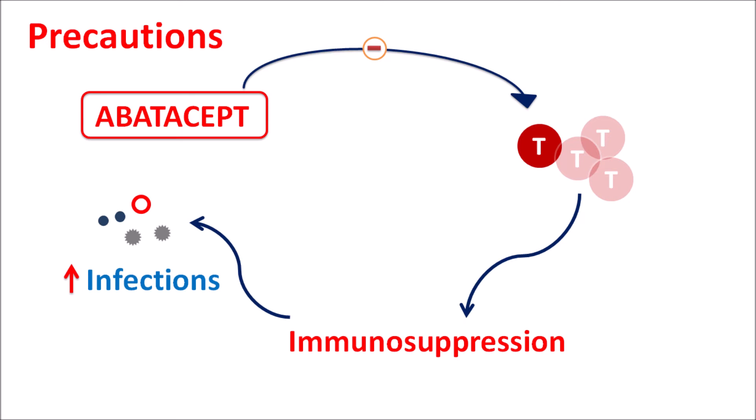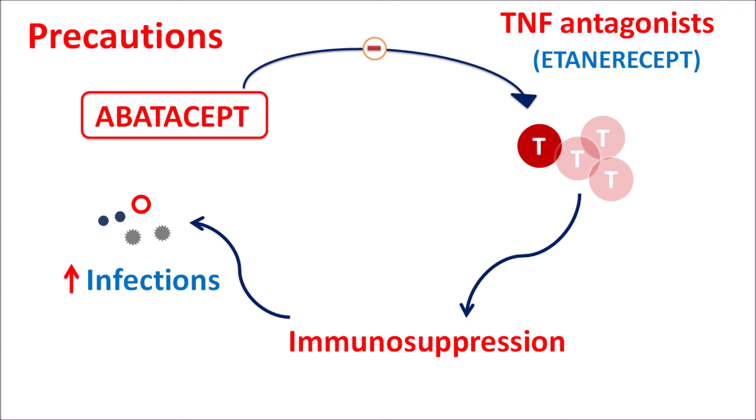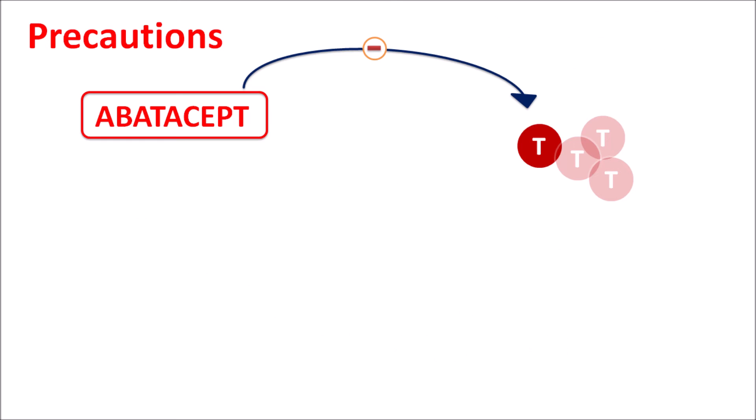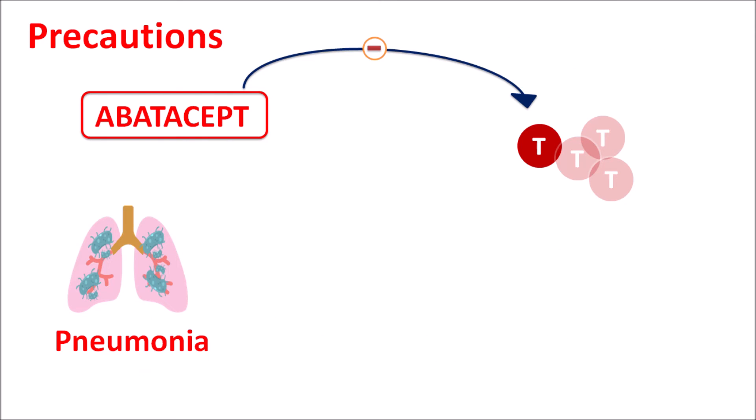This risk is particularly more important when abatacept is combined with other biological modifiers, for instance TNF antagonists — tumor necrosis factor alpha antagonists such as etanercept. If combined with abatacept, they can produce significant immunosuppression which increases the risk of infections. That's why TNF antagonists should not be combined with abatacept. Since this drug reduces immunity, it can reduce the effectiveness of immunization and increase the risk of pneumonia and tuberculosis.